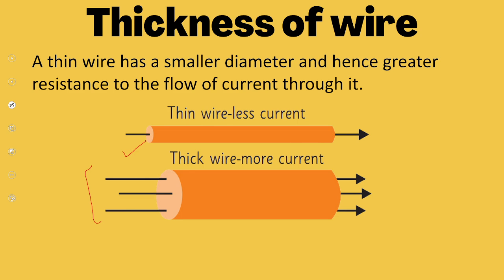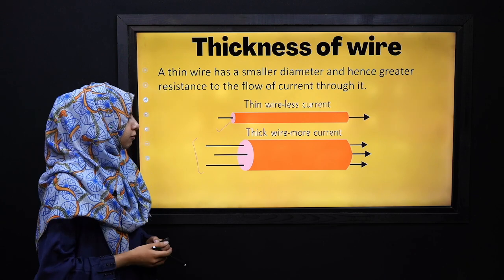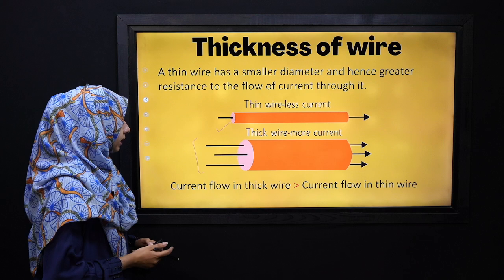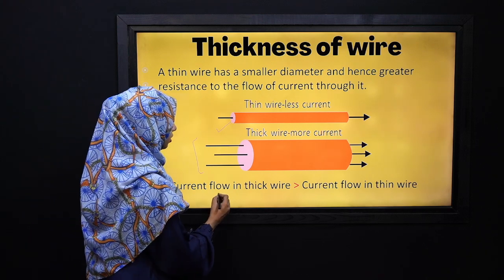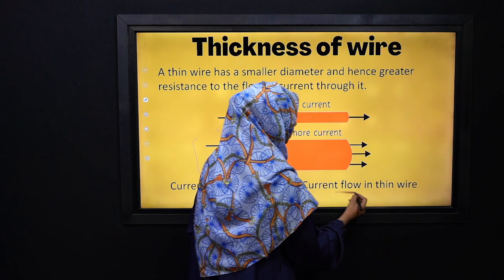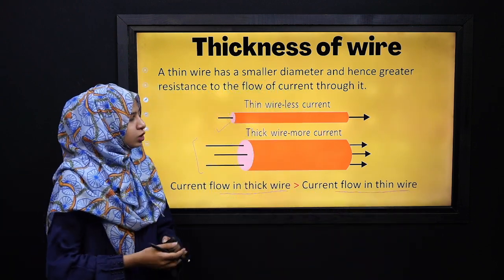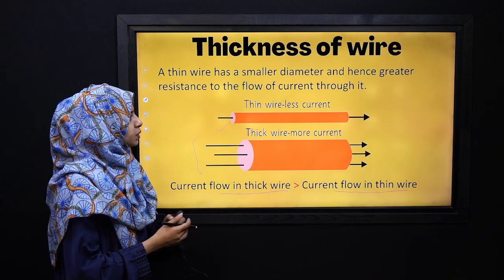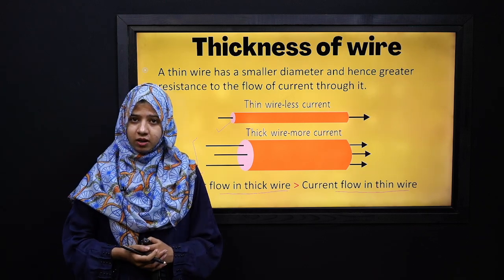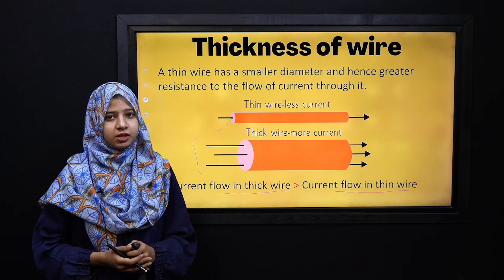We know that if the resistance is less, then the flow of current will not face any problem. We can say that the current flow in a thick wire is greater as compared to the current that flows in a thin wire. The thickness of the wire determines how well the current will flow and how low the resistance will be.